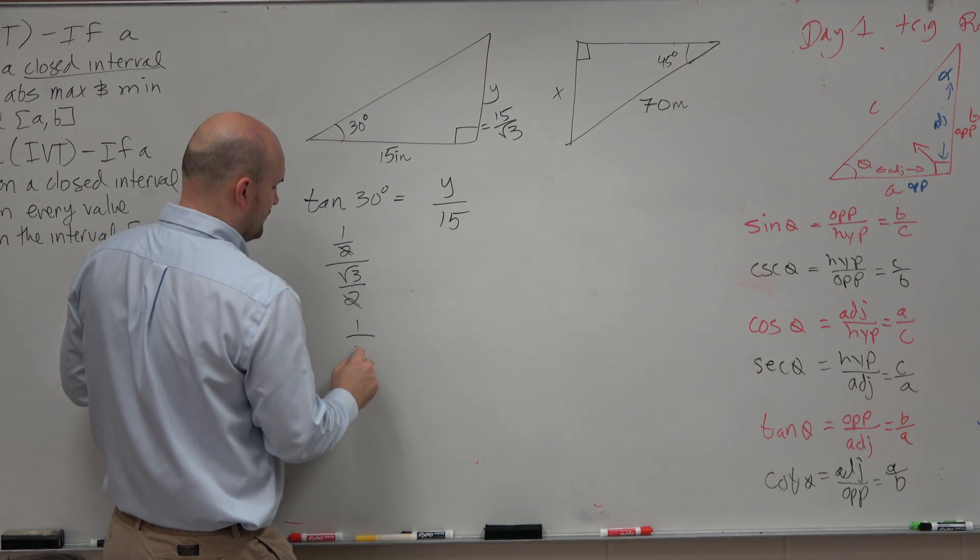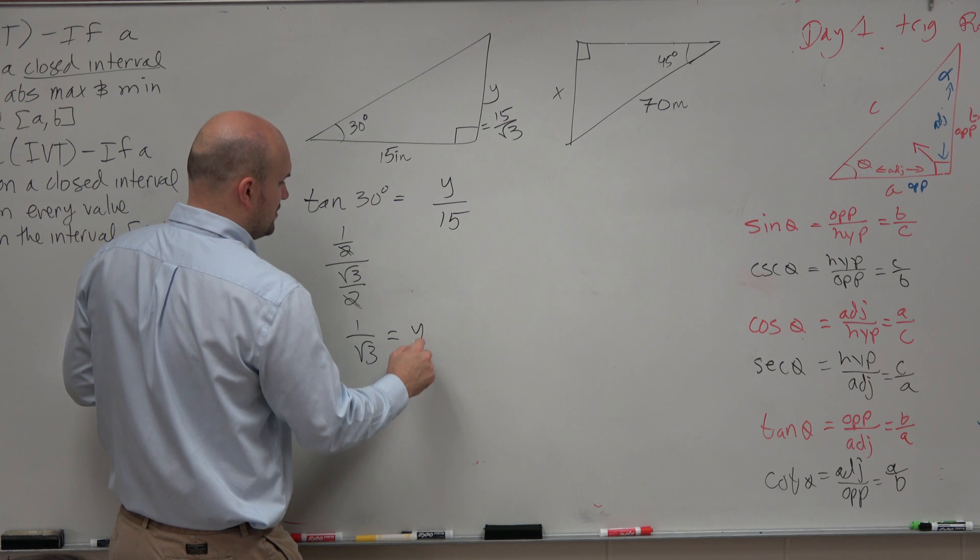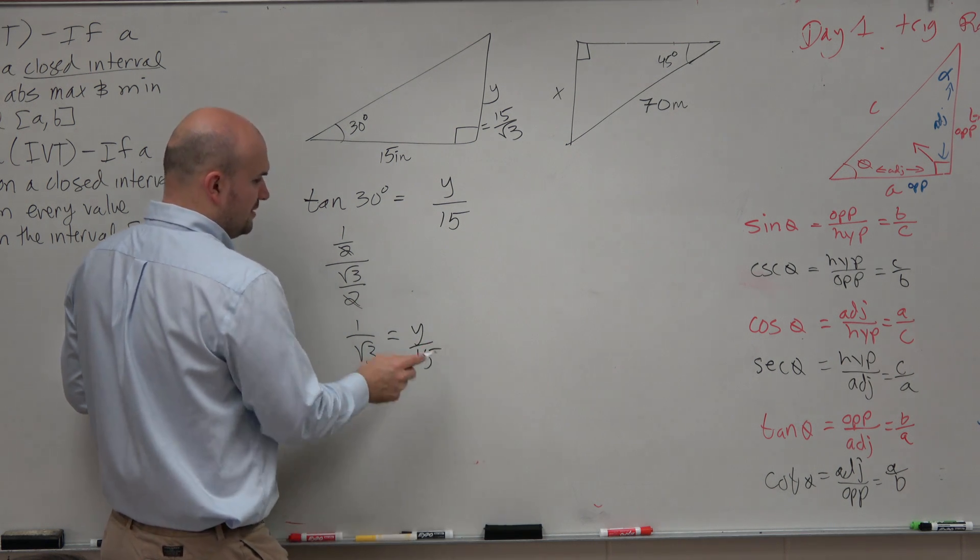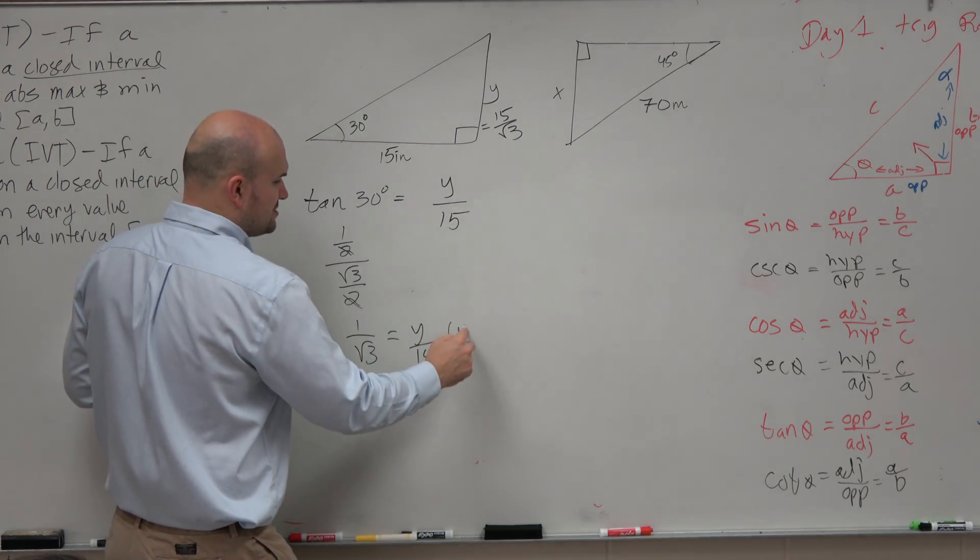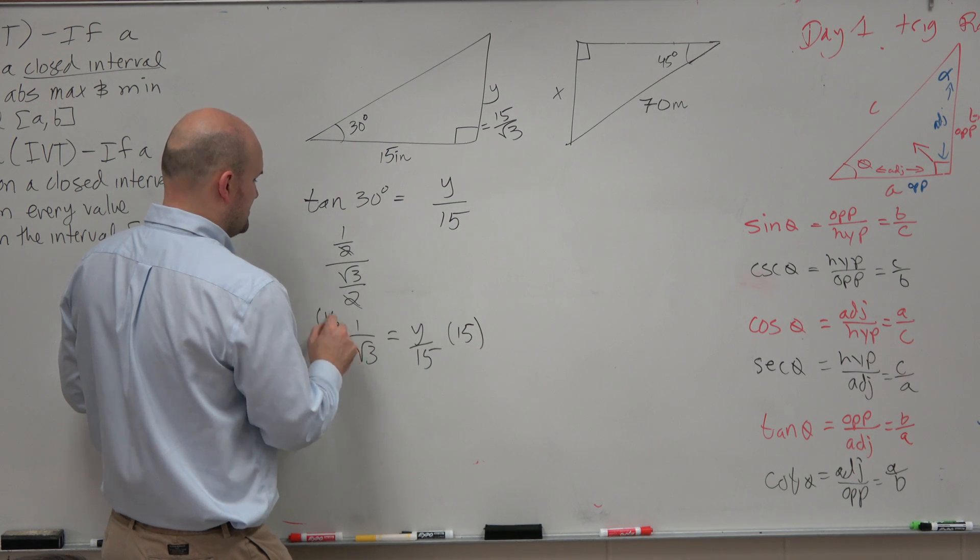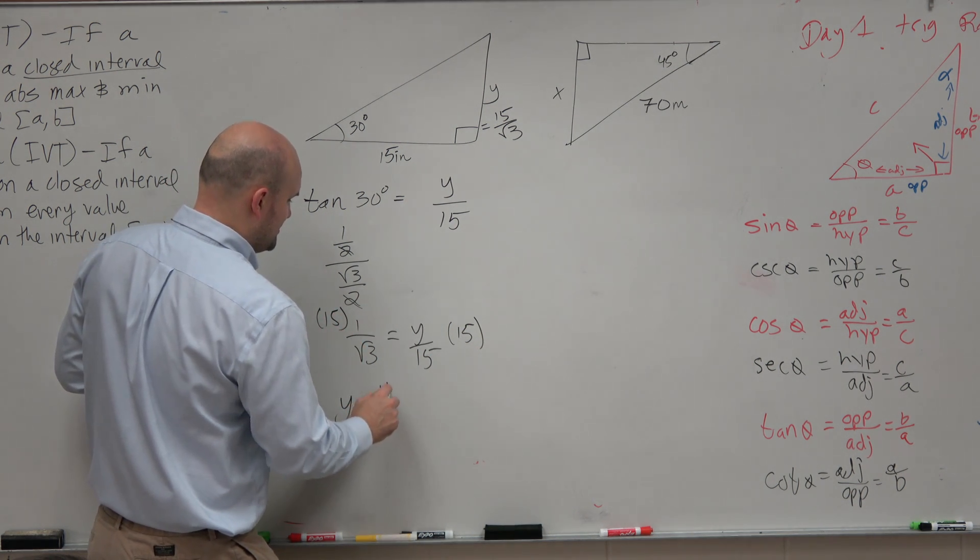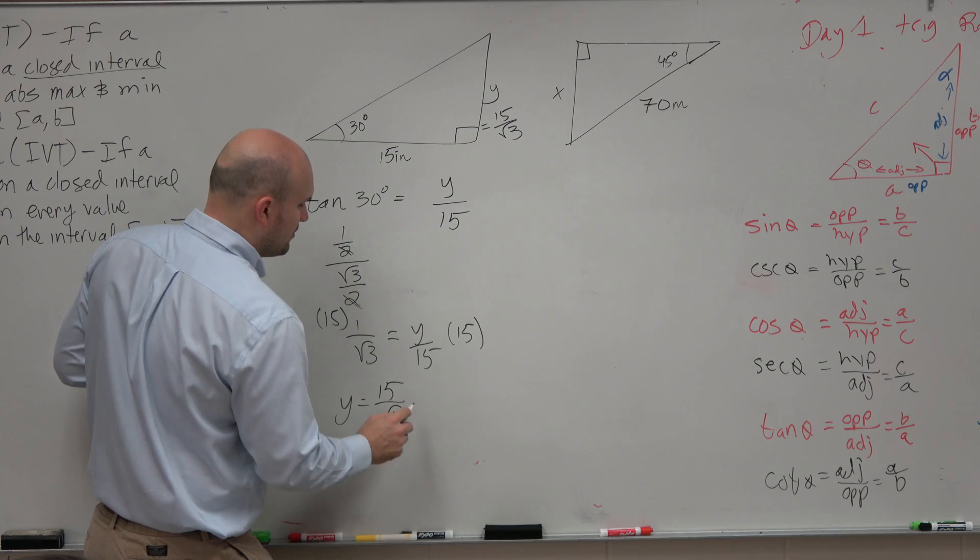which is really just equal to 1 over the square root of 3 equals y over 15. Now to solve for y, you just multiply by 15 on both sides. Y is equal to 15 over the square root of 3.